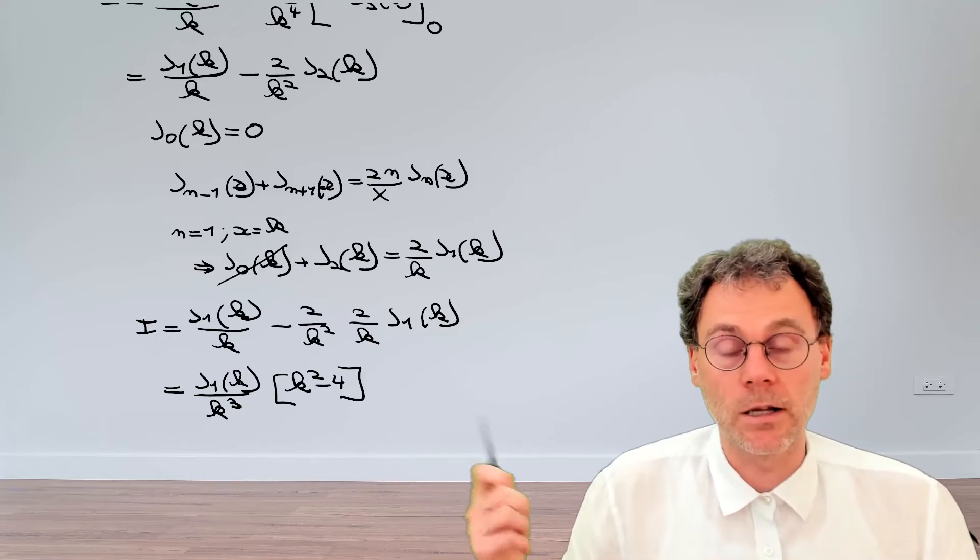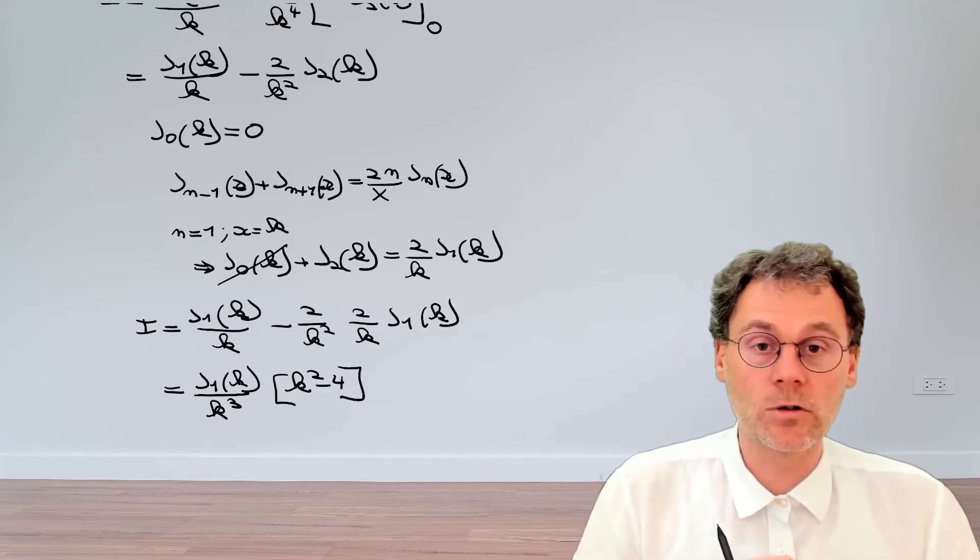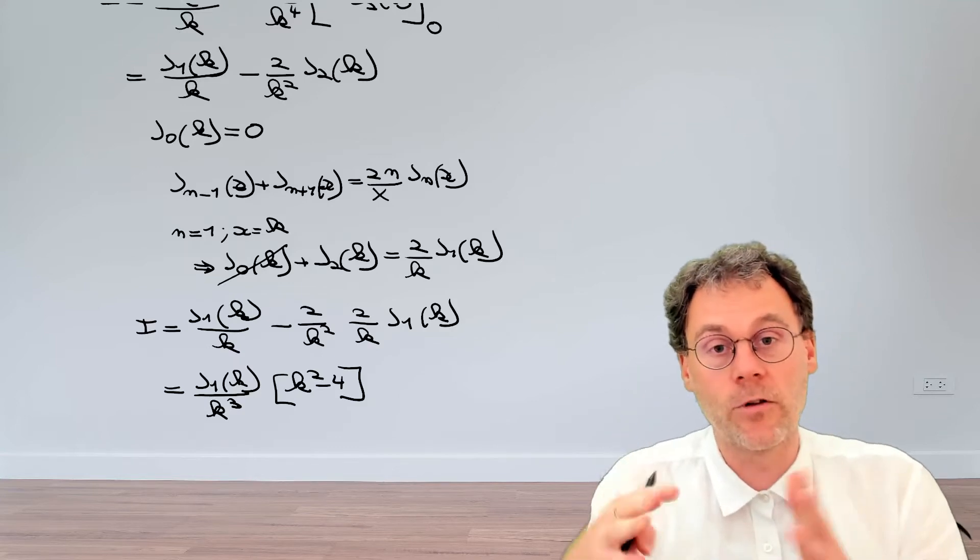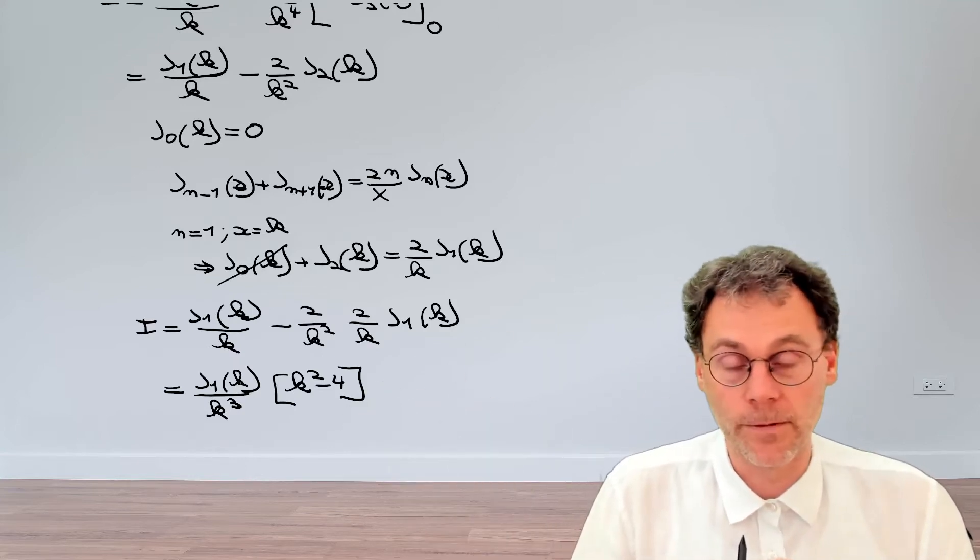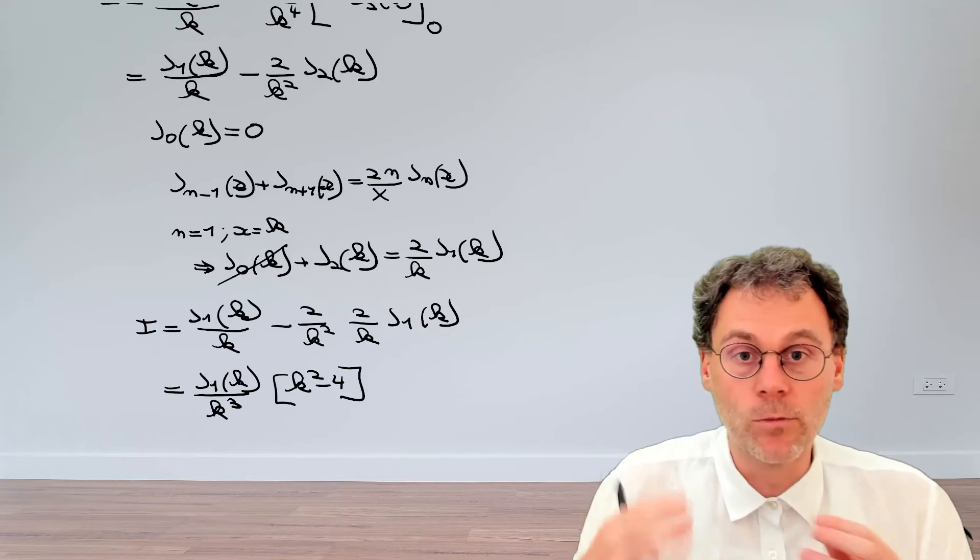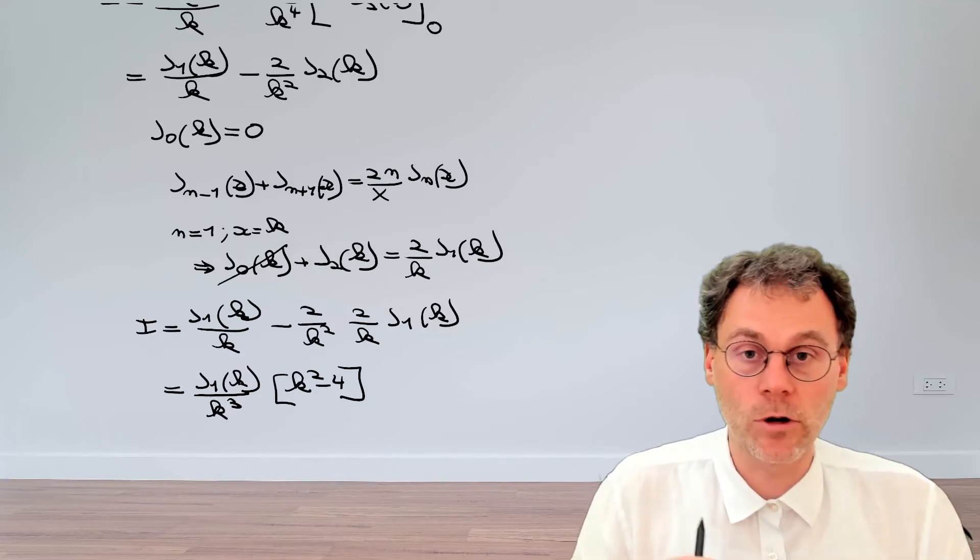So there we have it. This is a technique that you can use to solve integrals involving the product of a Bessel function and a power of t. Obviously, you can be more creative and use other types of recurrence relationships. But this is a rather general technique that should work for all powers of t.